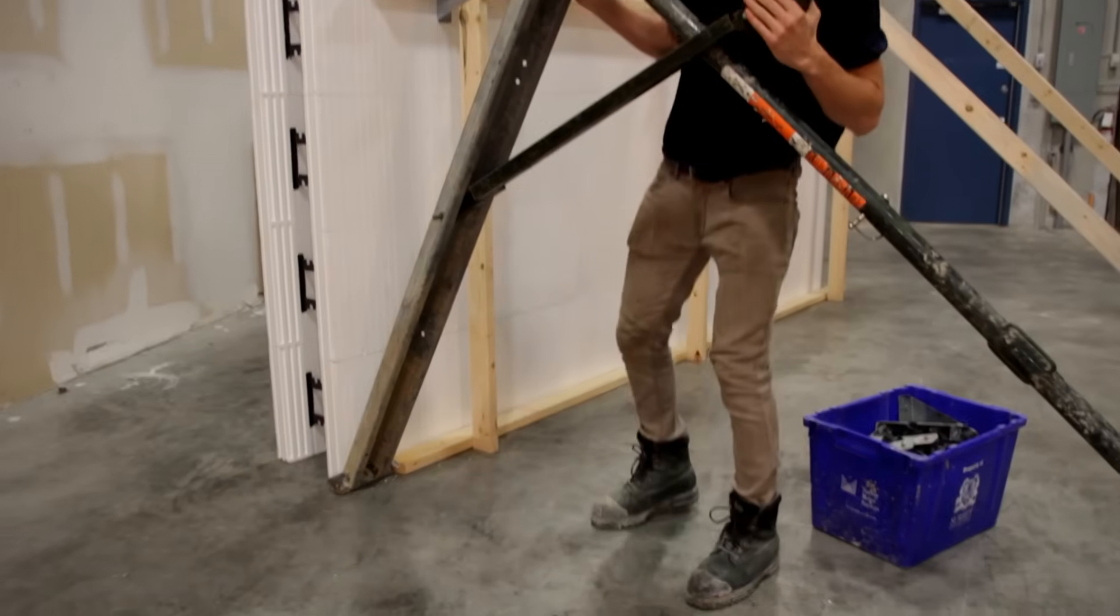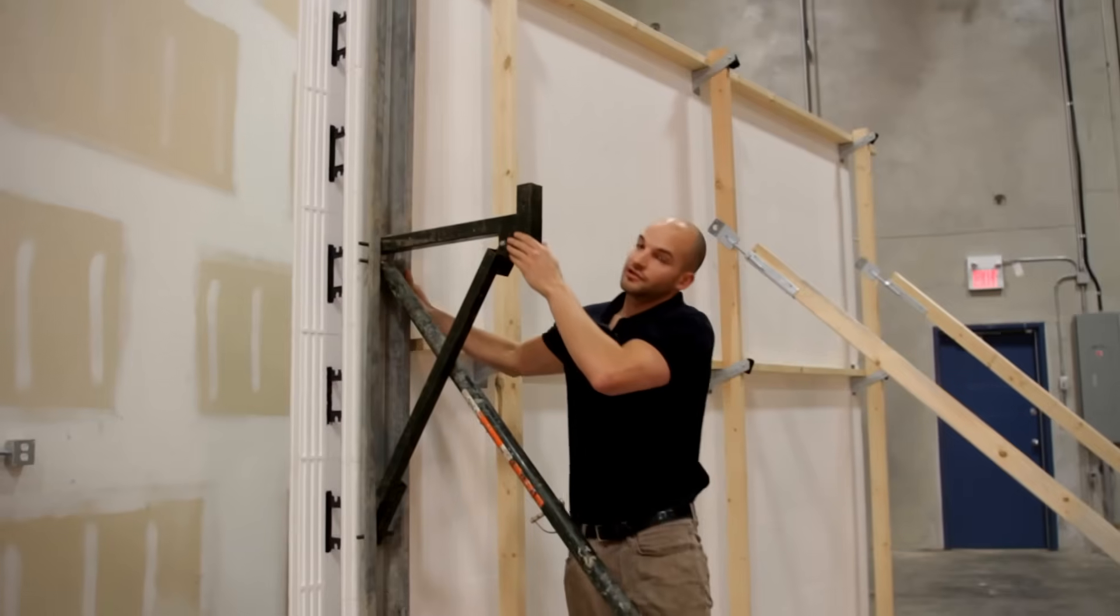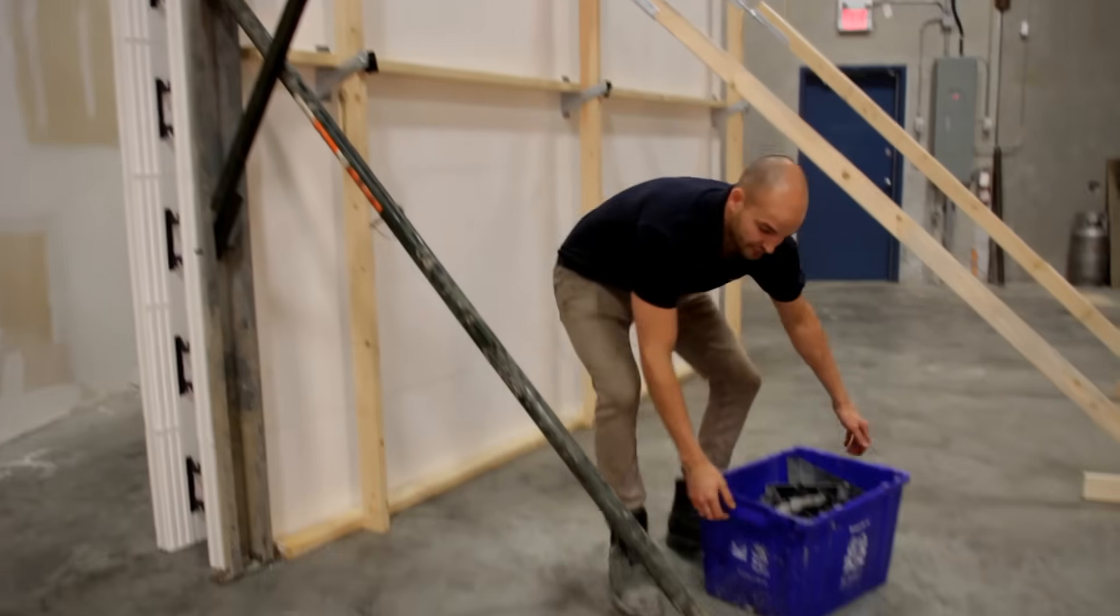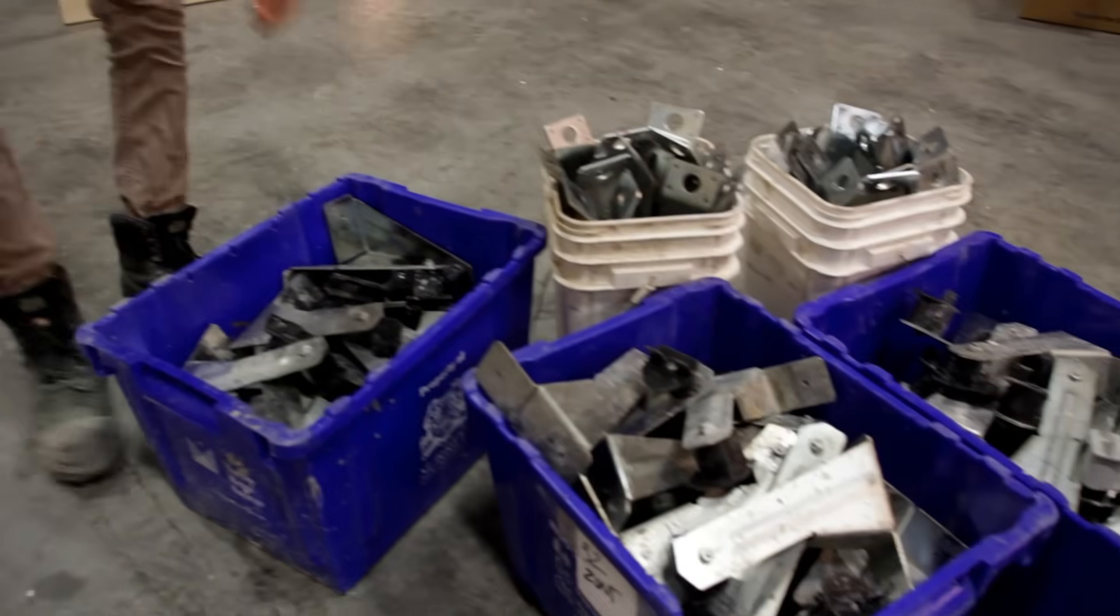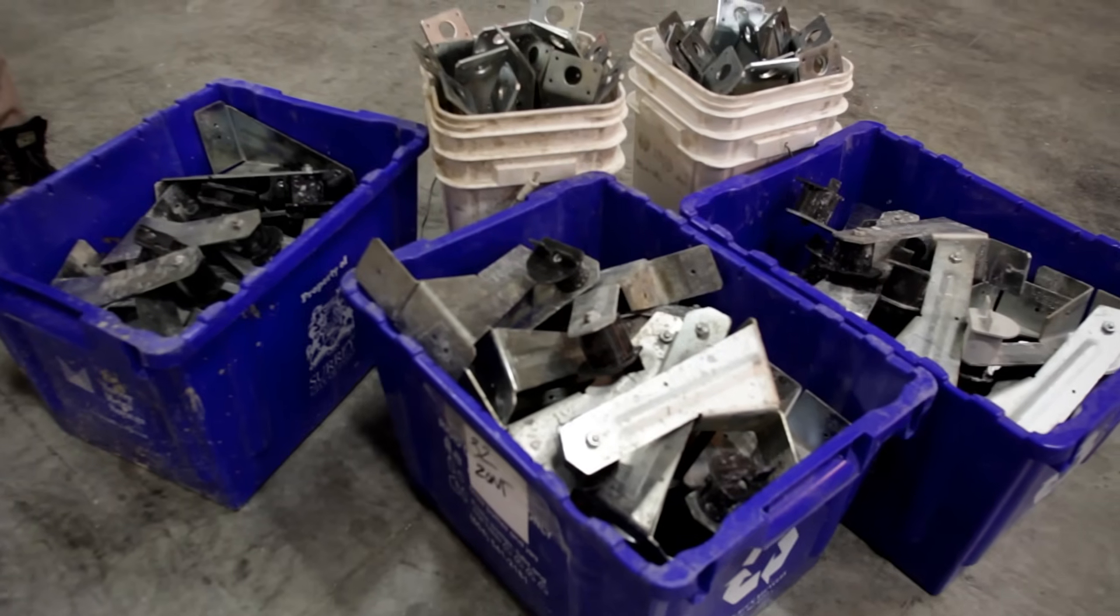So I have here a 10 foot traditional ICF brace. Now here is the equivalent of 40 Zont braces. 280 pounds of steel that can fit in the back of a compact car.